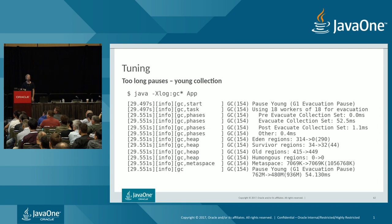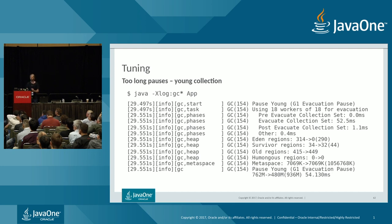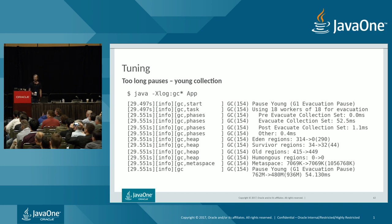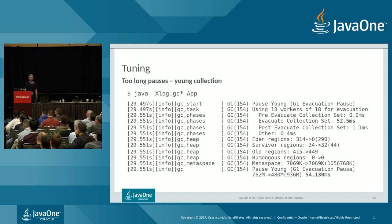With gc* logging, for GC 154 we can see: it's a young pause, using 18 worker threads for evacuation. There are different phases: pre-evacuate collection set, evacuate collection set, post-evacuate collection set, and other time. We see region distribution before and after — 314 eden regions going to 0 afterwards, all becoming free. We had 34 survivor regions going into collection, with 32 remaining. Old regions increased from 415 to 449. We also get heap usage before and after, capacity, and the total pause time.